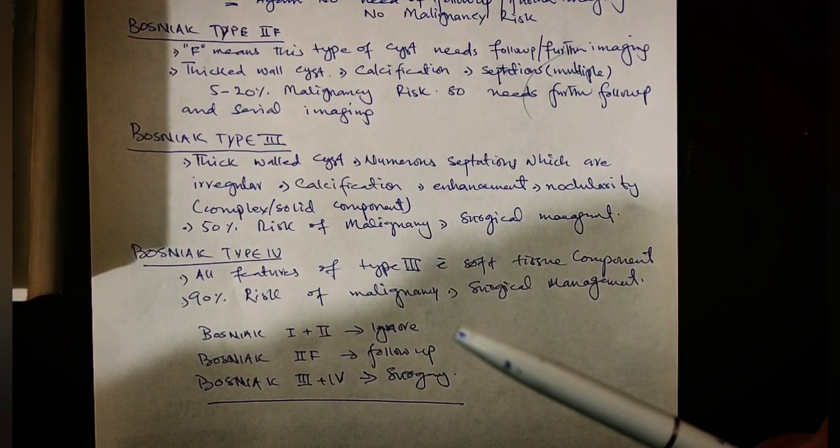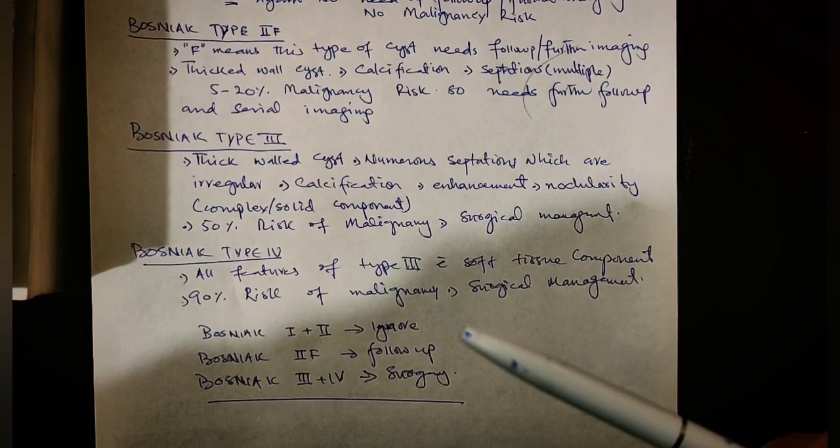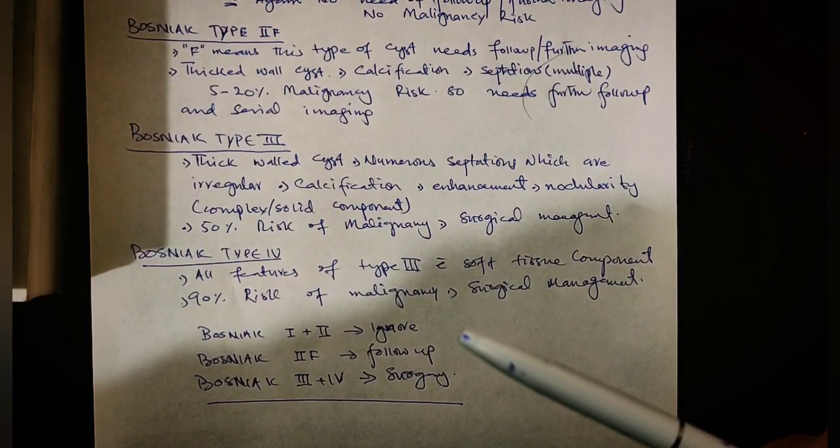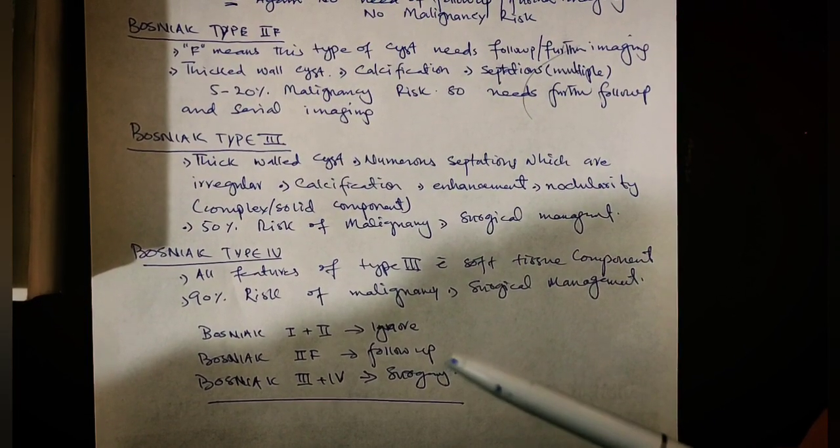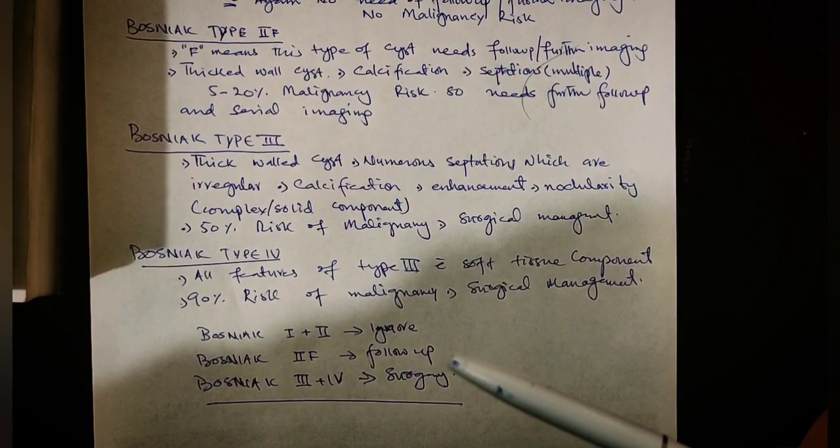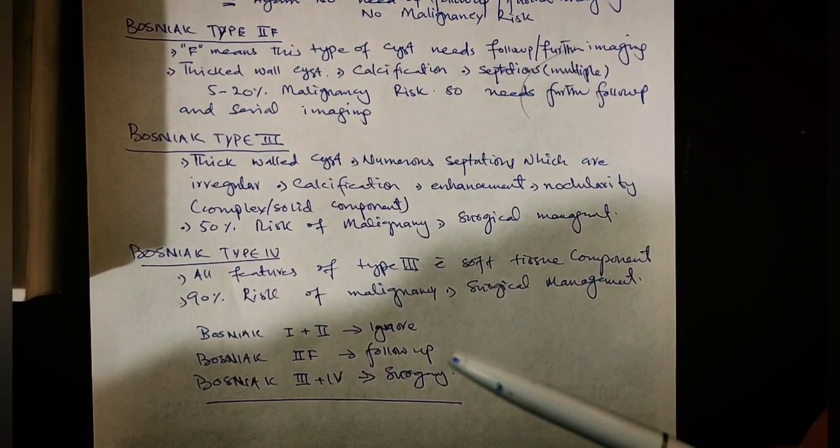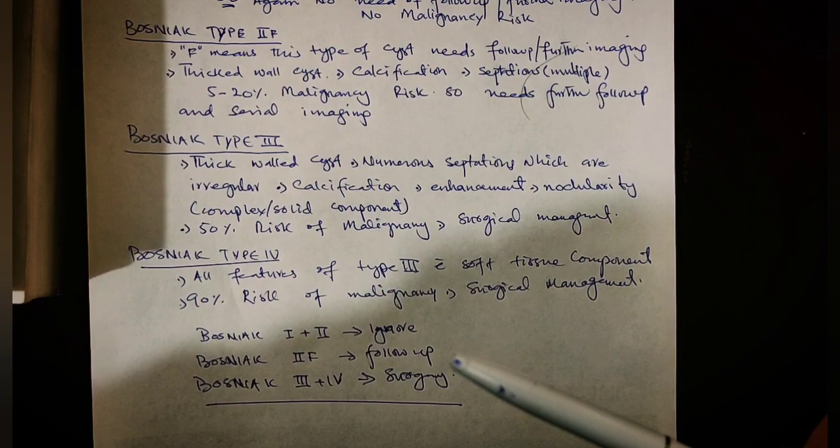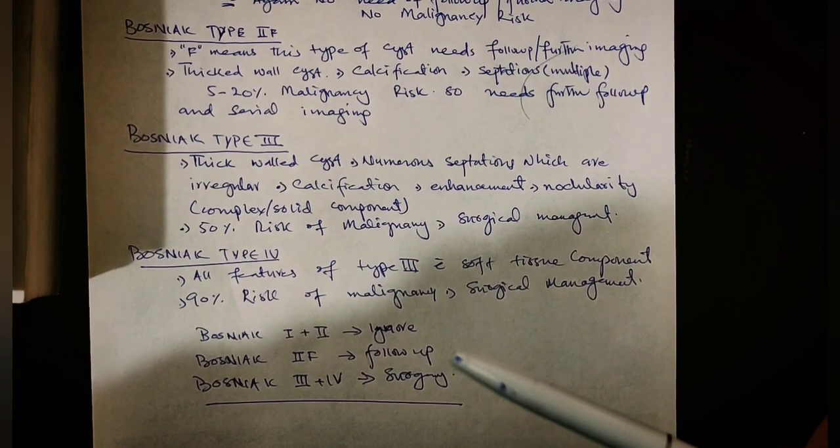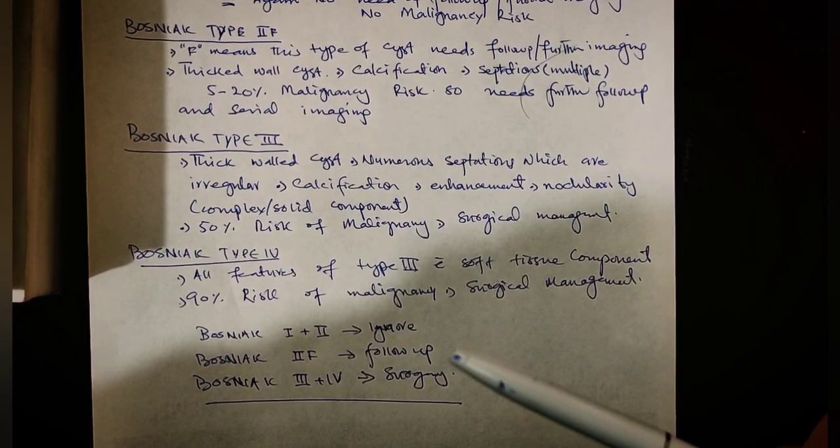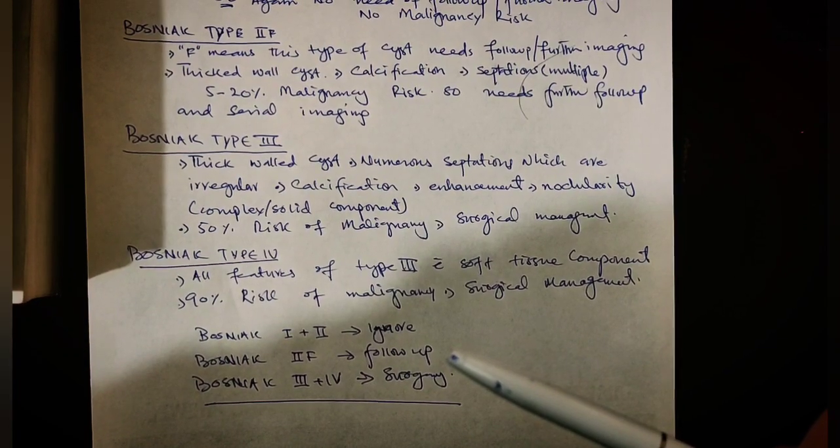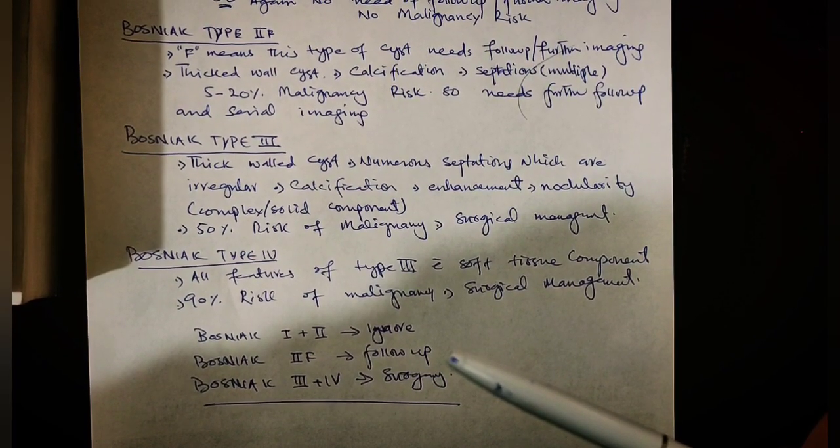In Bosniak Type IIF, since there is a 5 to 20 percent risk of malignancy, such patient needs to be serially assessed and further imaging advised to have a look on the cyst. If it is becoming or having malignant features, then again you need to manage it surgically.